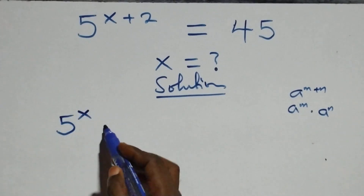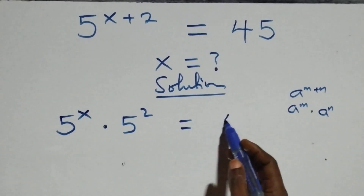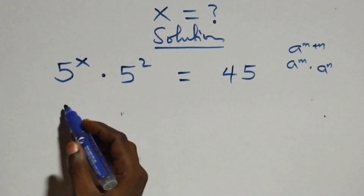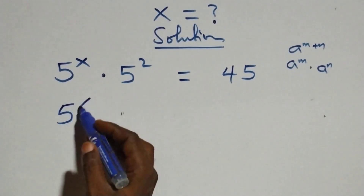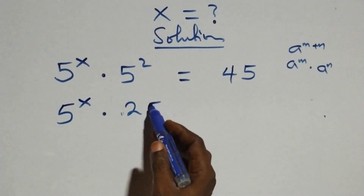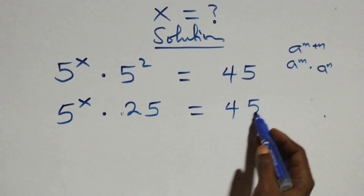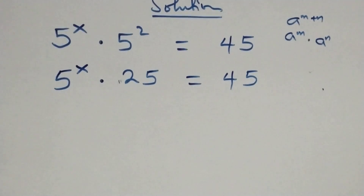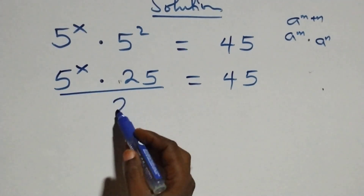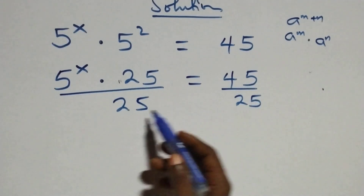So 5 raised to power x times 5 squared equals 45. The next step: 5 times 5 is 25, so we have 5 raised to power x times 25 equals 45. We then divide both sides by 25.